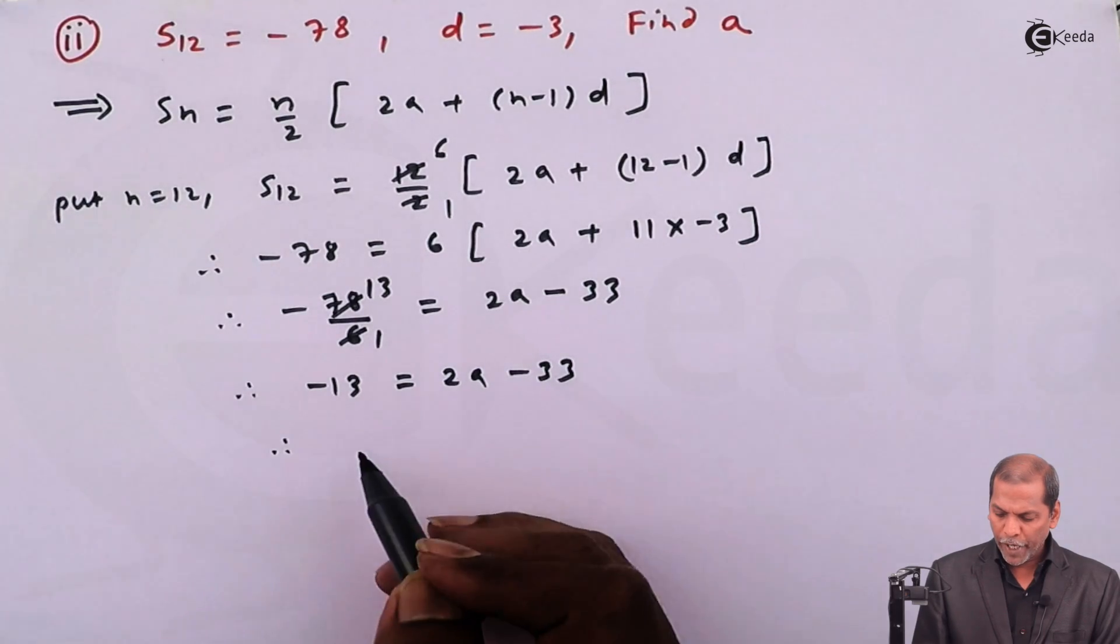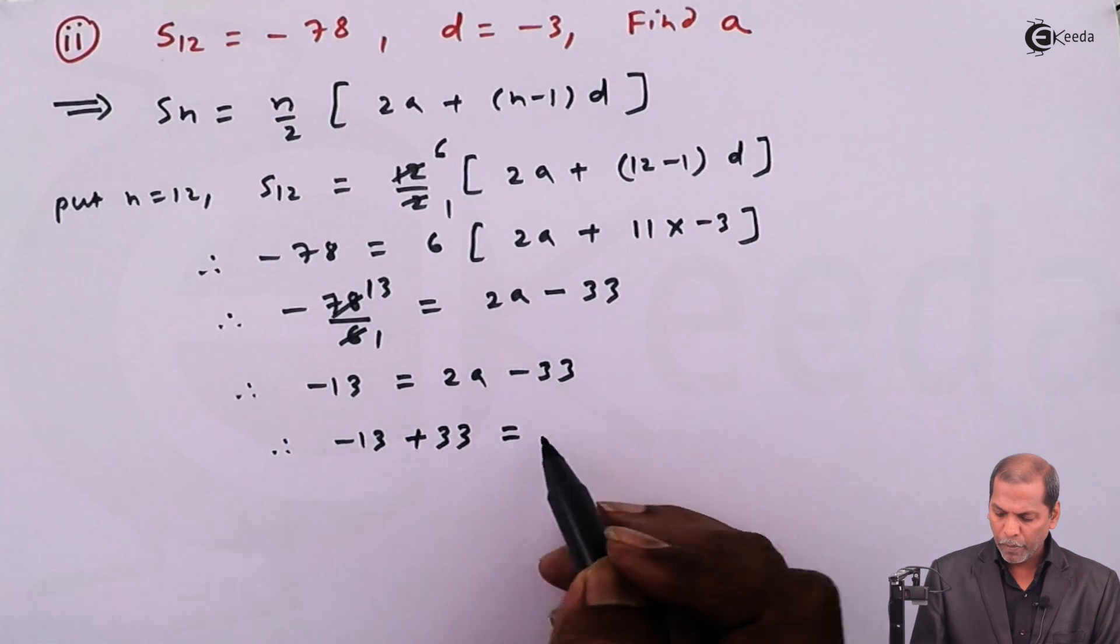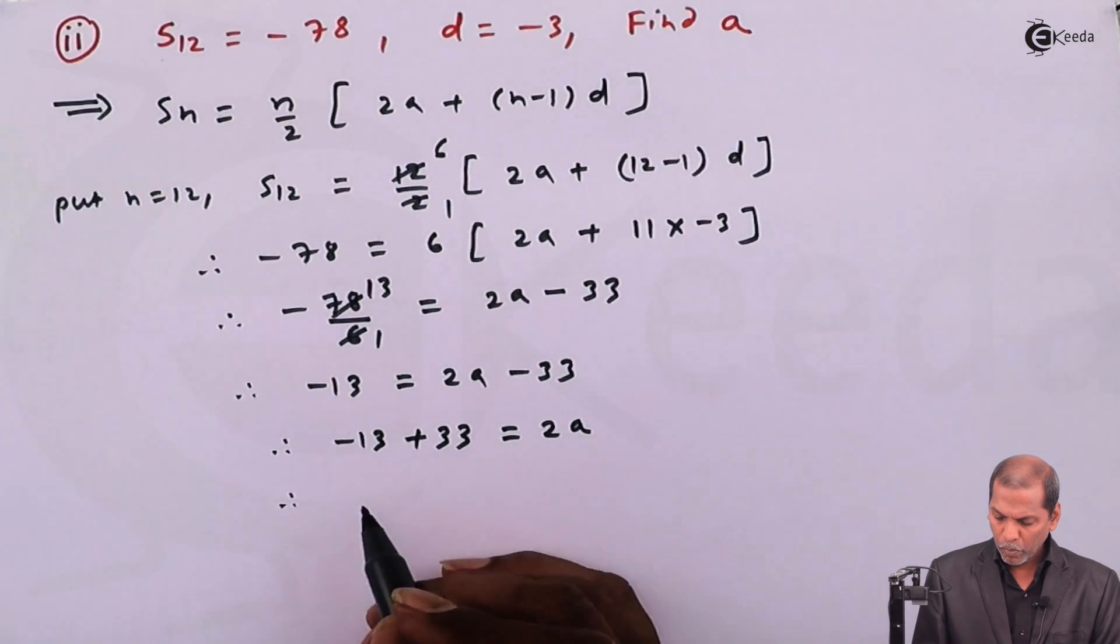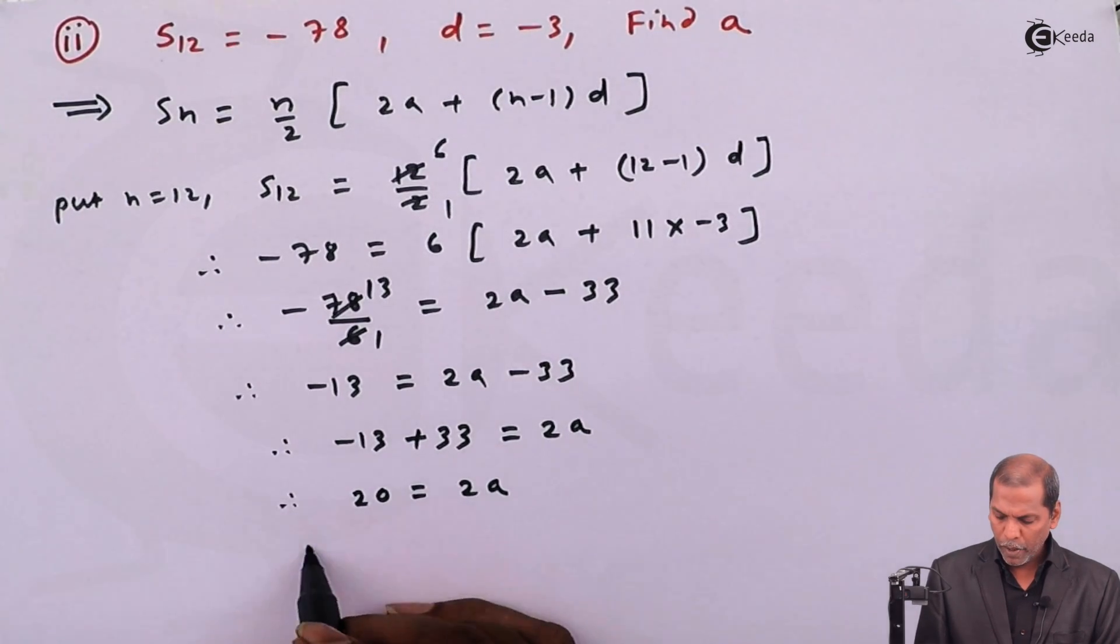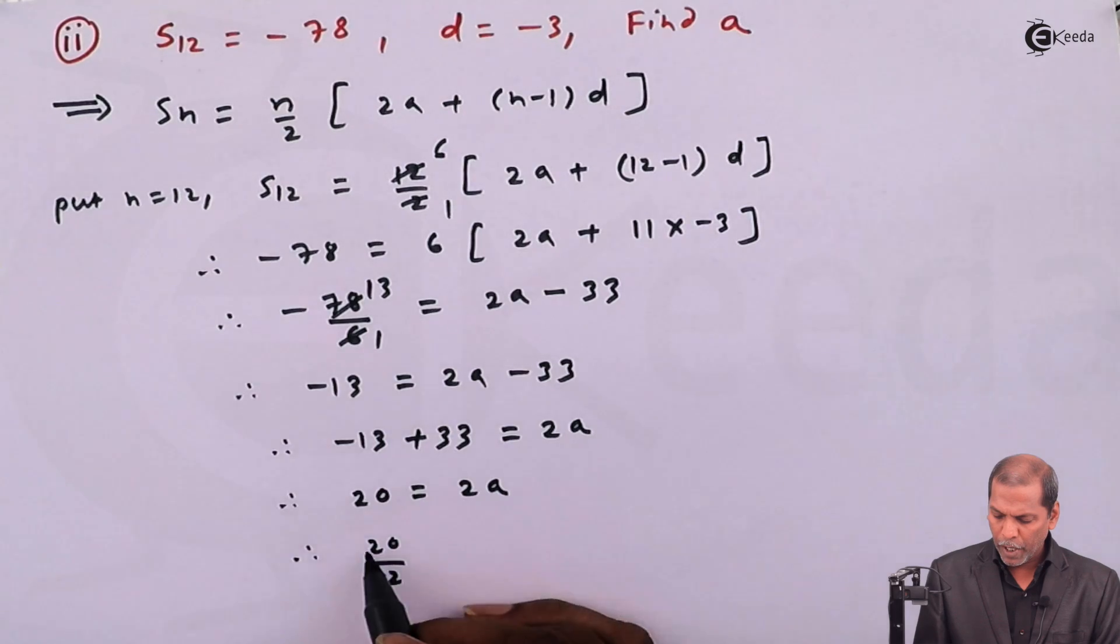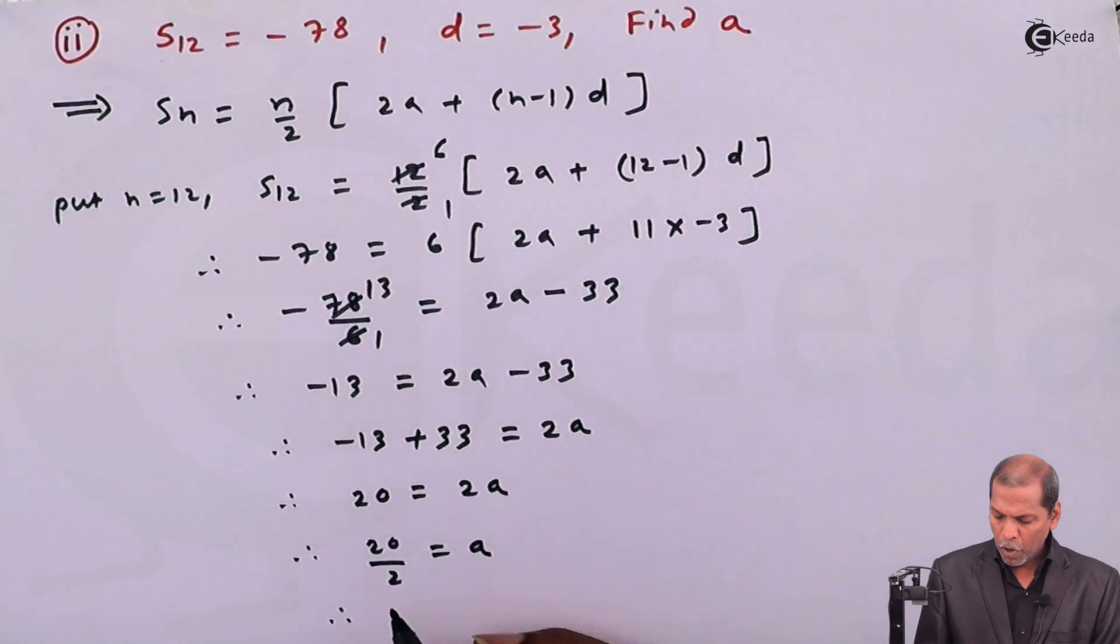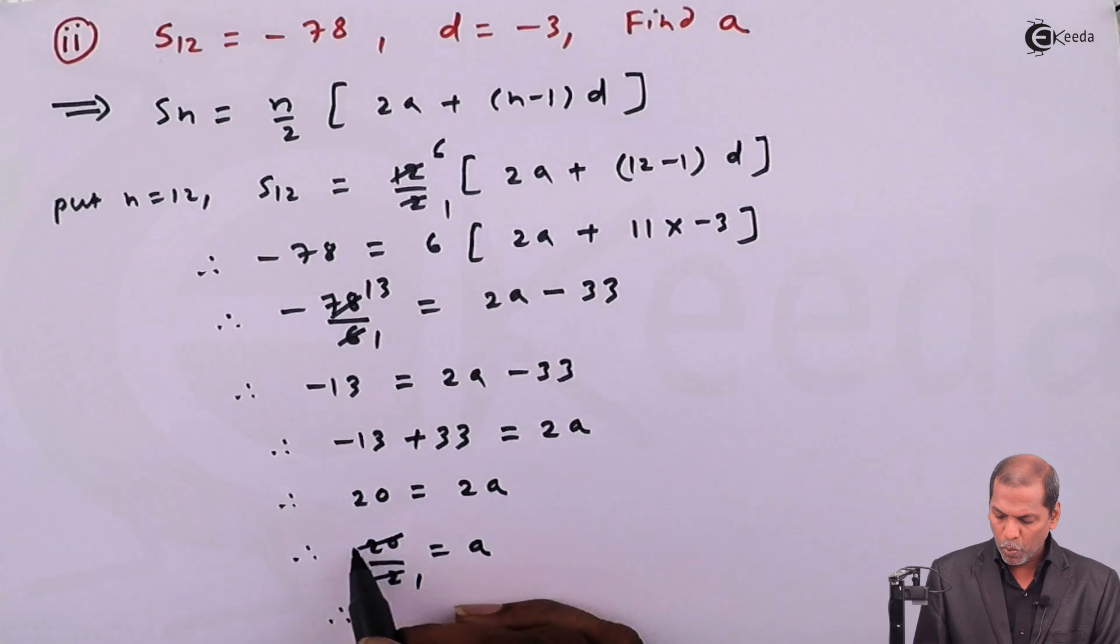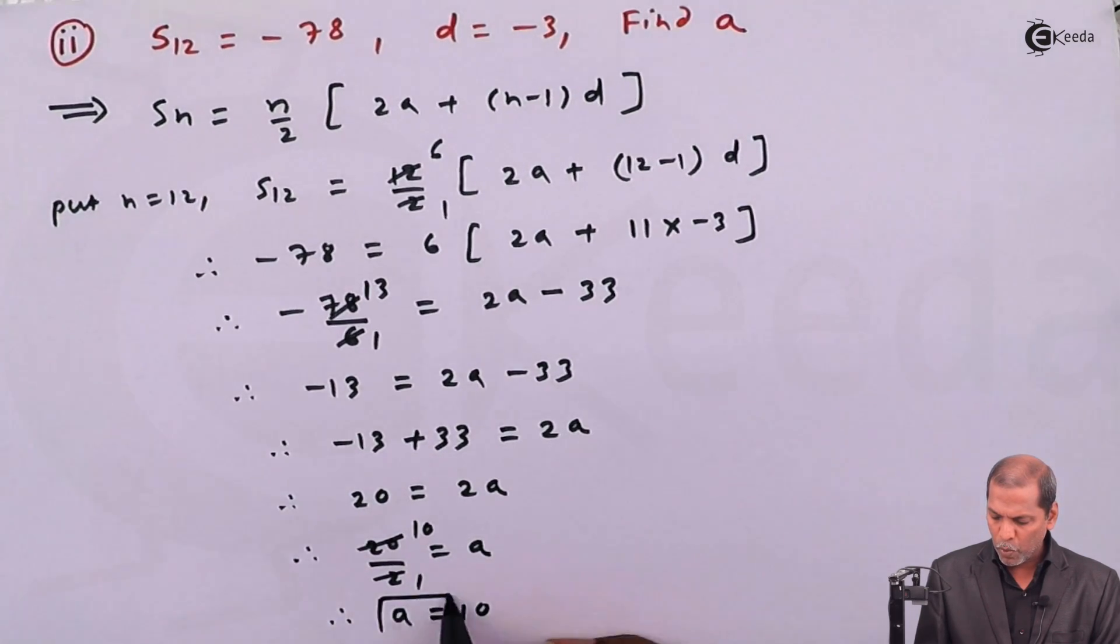On further simplification, minus 13 plus 33 equals 2a. Therefore 20 equals 2a and finally 20 upon 2 equals a. On cancellation, 2 into 10 are 20, we have a equals 10.